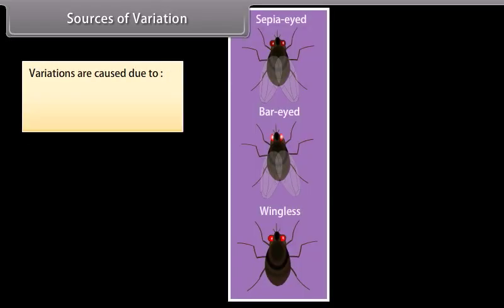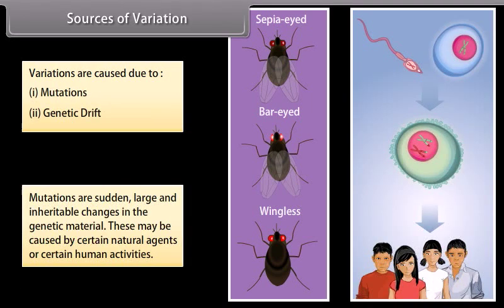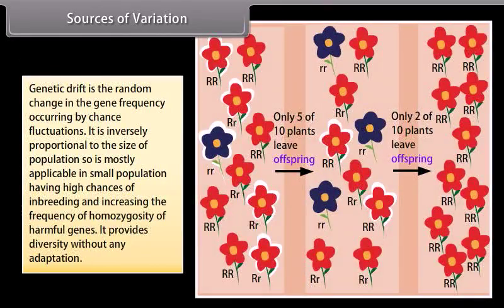Variations are caused due to mutations and genetic drift. Mutations are sudden, large, and inheritable changes in the genetic material. Genetic drift is the random change in gene frequency occurring by chance fluctuations. It is inversely proportional to the size of the population, so it is mostly applicable in small populations, having high chances of inbreeding and increasing the frequency of homozygosity of harmful genes. It provides diversity without any adaptation.